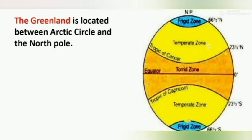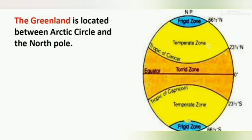This zone is permanently frozen, with no sunlight for most of the months, and it remains cold throughout the year because it receives very slanting rays of sun. Greenland is located between the Arctic Circle and the North Pole. The type of climate found in Freezer Zones is called Polar Climate. Both the North Pole and South Pole have Polar Climate, and since most of Greenland lies in the Arctic Circle, Greenland also has a polar type of climate.